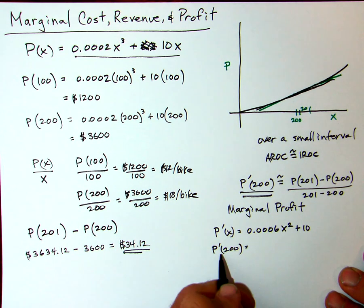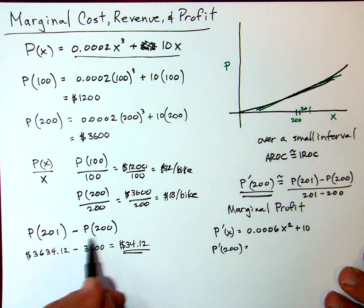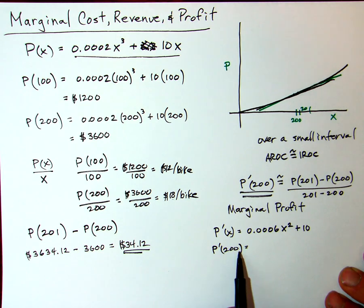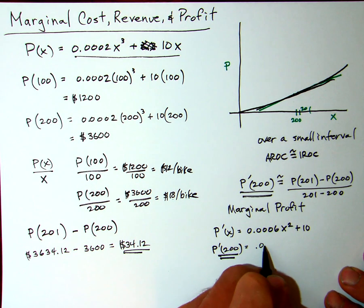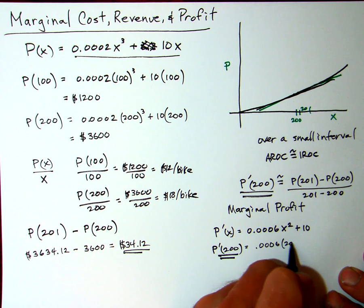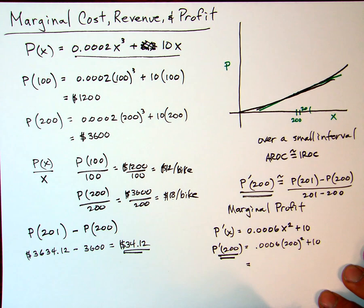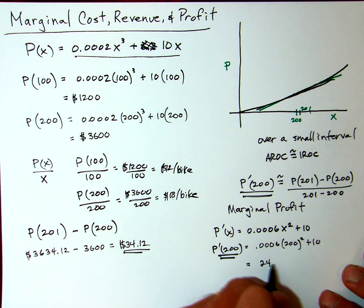So what is P'(200)? In other words, this is another way to interpret this—this is the instantaneous rate of change of profit right at 200 bicycles, which is basically equivalent to saying the profit made off of the 201st bicycle. Profit is changing; this is the instantaneous rate of change of profit. It tells us how the profit is changing right at 200 bicycles. And if we put that in, 0.0006 × 200² + 10, we get 24 + 10, or $34.